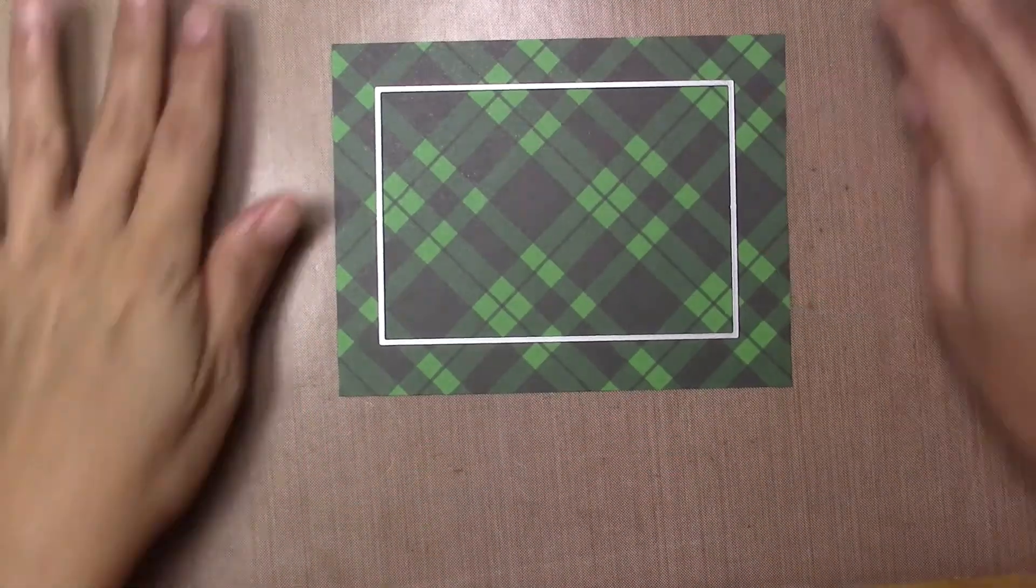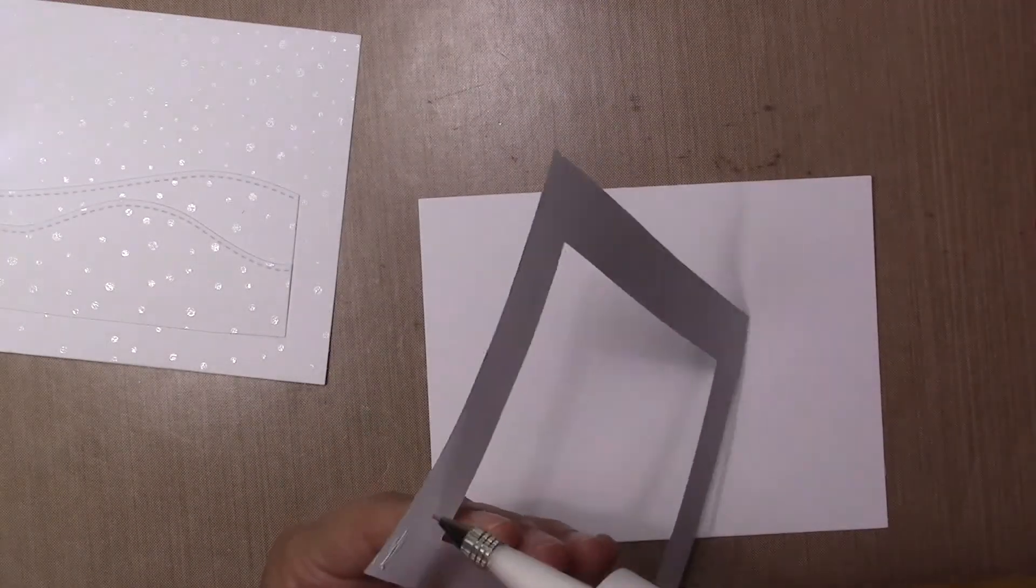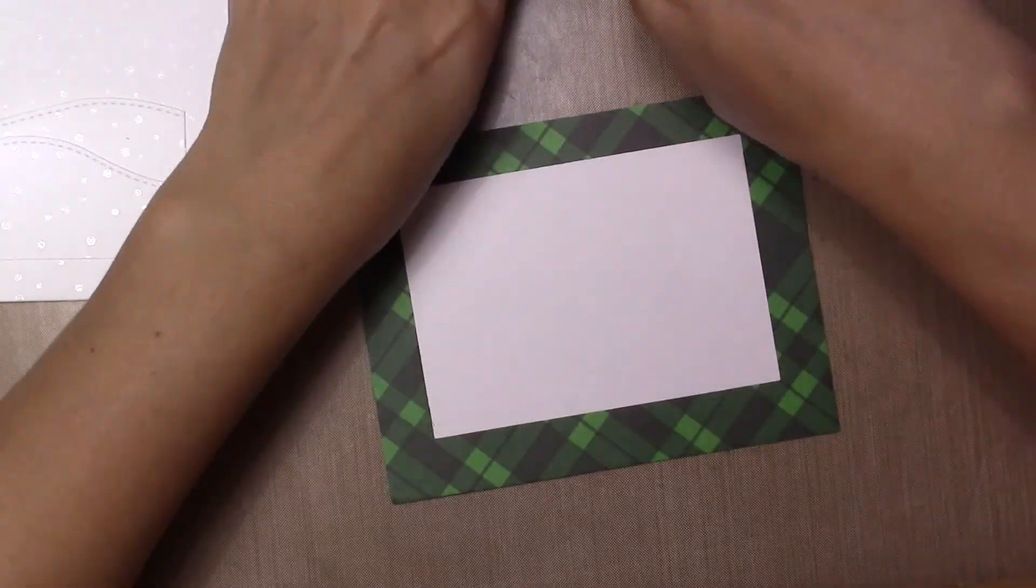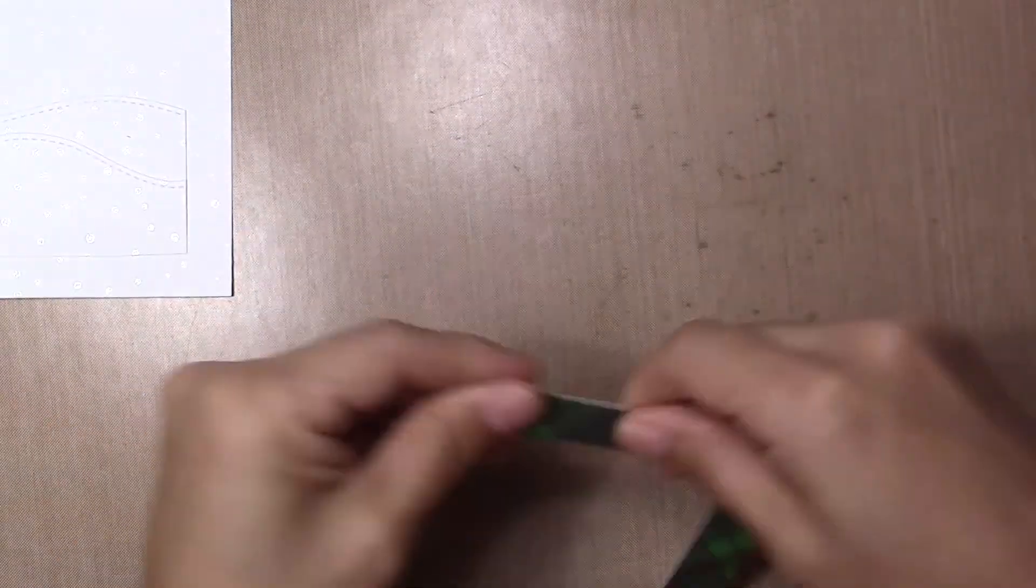Now I'm going to cut a frame in patterned paper. This frame I'm going to add to cardstock and then cut the inside again.